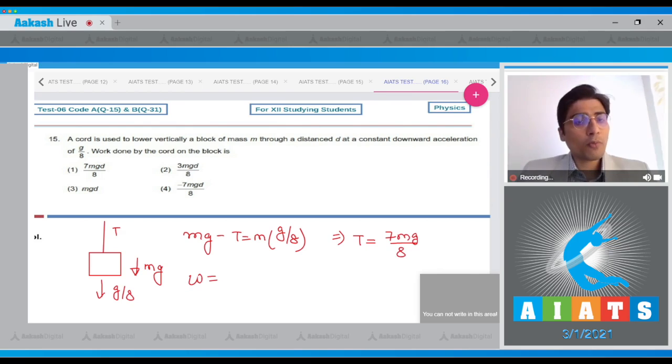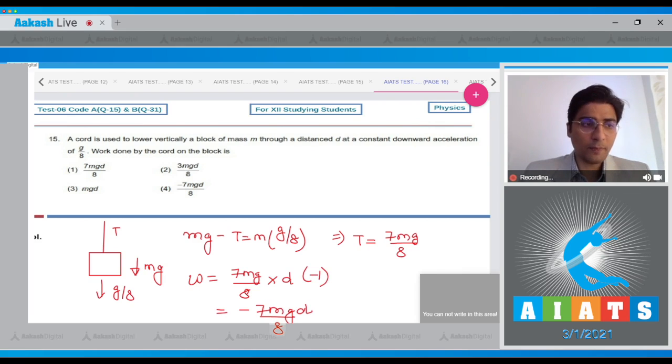Now, the work done will be equal to the dot product of displacement and tension, that will be 7 mg by 8 into displacement d, and a negative sign as the tension and displacement are in opposite direction. Meaning that our answer should be minus 7 mg d by 8. And as we see the options, the correct answer should be option number 4.